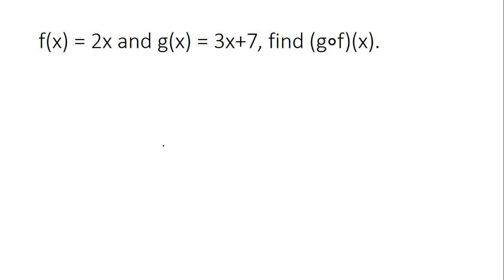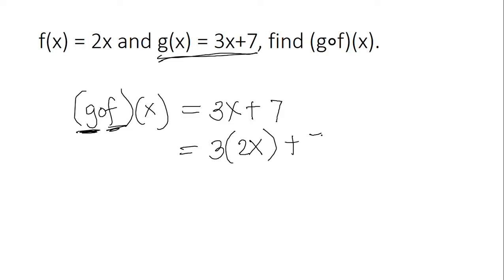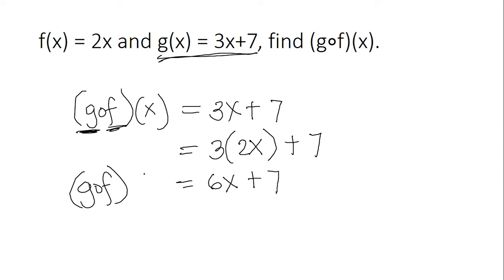Now for g circle f of x, the first function is g of x: 3x plus 7. We replace our x by f of x, which is 2x. So we have 3 times 2x plus 7: 3 times 2x equals 6x, plus 7. So g circle f of x equals 6x plus 7.